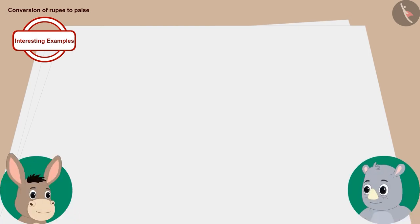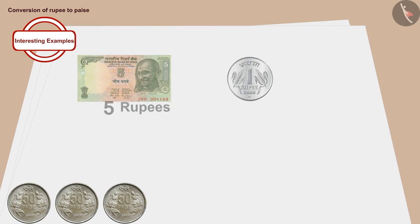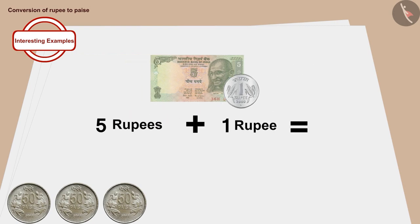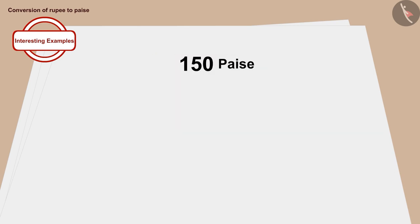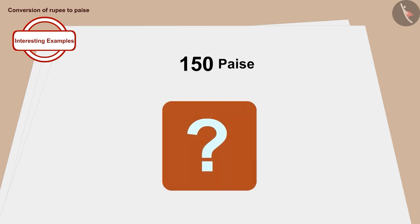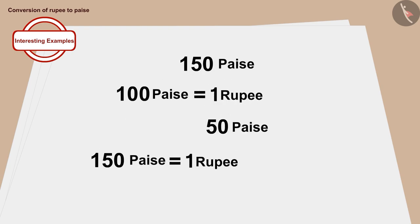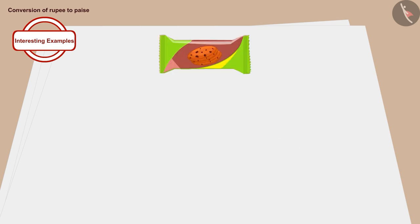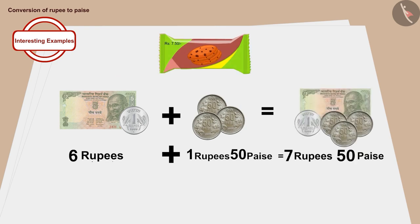If Gaggoo gave Bola these notes and coins for biscuits, can you find out what the cost of the packet of biscuits is? Five rupees and one rupee added together becomes six rupees. And how much is 3 fifty-paise coins? Three times 50 is 150 paise. If we write it in rupees, 100 paise is one rupee, and we have 50 paise left — so 150 paise becomes one rupee and 50 paise. Adding it to six rupees, the price of a packet of biscuits is seven rupees and 50 paise.